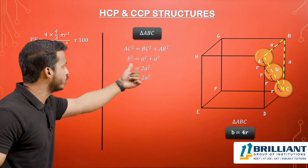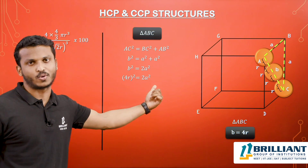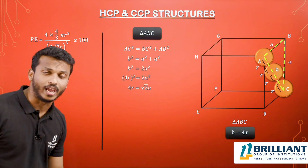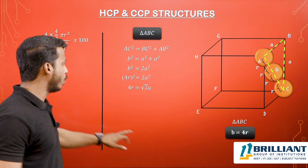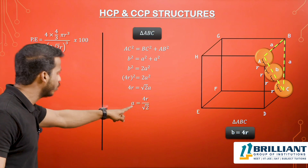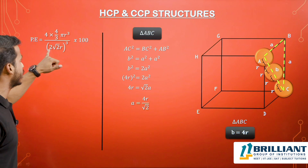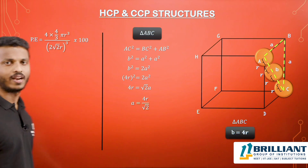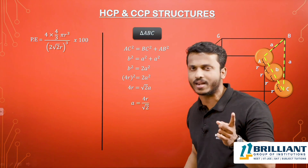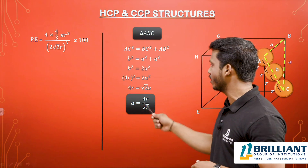Substituting B = 4R into B² = 2A²: (4R)² = 2A², so 16R² = 2A². Taking the square root of both sides: 4R = √2 · A. Solving for A: A = 4R/√2, which simplifies to A = 2√2 · R.